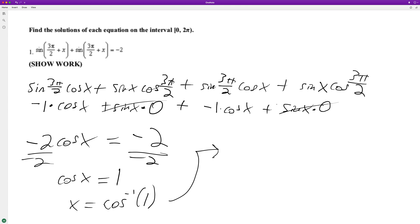It only equals that at 0, so x equals 0. And that makes sense because if x is 0, sine of 3π/2 is negative 1, and negative 1 plus negative 1 equals negative 2.